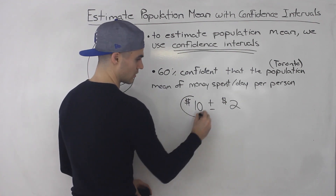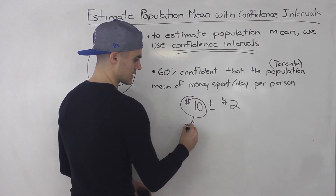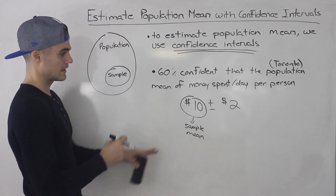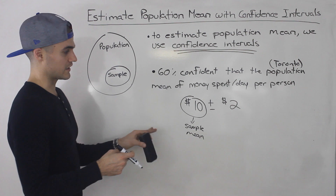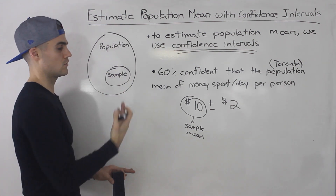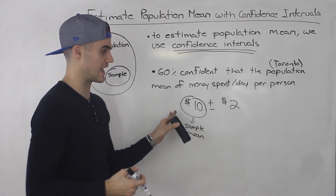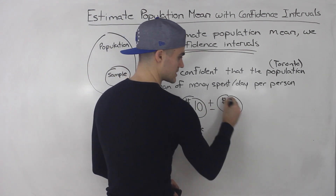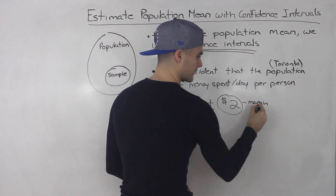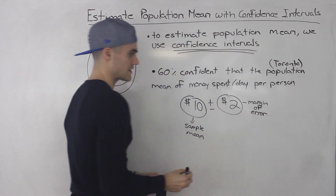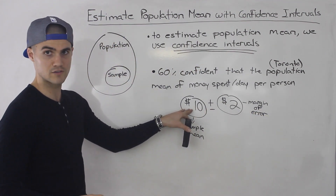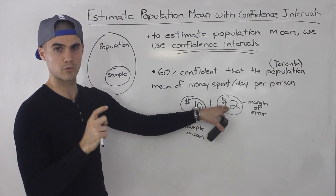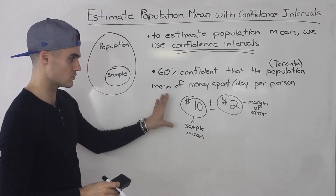This $10 represents the sample mean. So whatever sample I took — whether it was 100 people, 200 people — this is the sample mean. But can we just use the sample mean and say that's the population mean? No, we can't. So we have to add a buffer to the positive side and the negative side — we add this plus or minus $2. This plus or minus $2 is called the margin of error. There are actually ways to find this. The sample mean is easy to find — you take the total divided by the sample size. The margin of error is a little more technical, and I'm going to show you how to do that in the future.